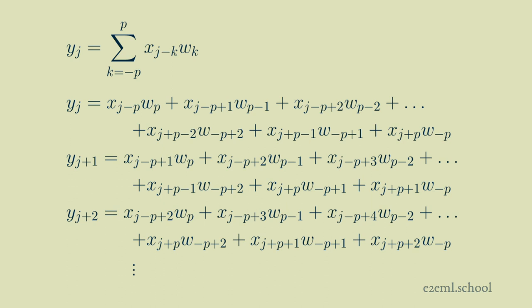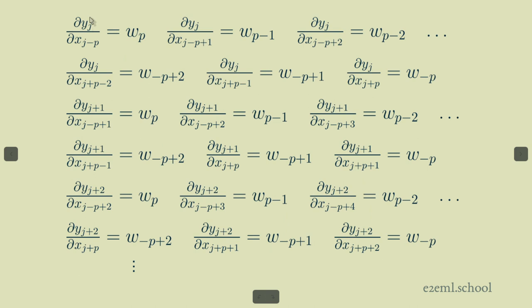Then we can take, in each of these cases, we can take the derivative of that y_j with respect to each of the x's that occur in it. So in this case, the very first element, if we take the derivative of y_j with respect to x_(j-p), the derivative is w_p.